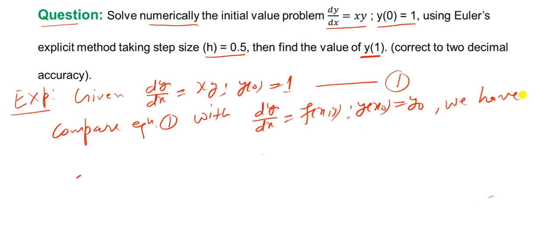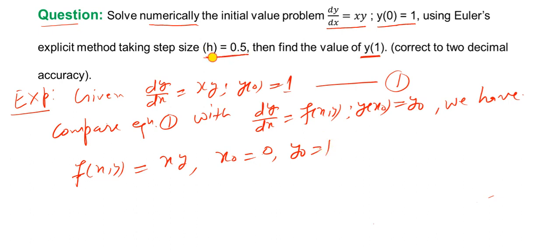We have f(x, y) = xy, x0 = 0, y0 = 1, and the given step size h = 0.5. We want to compute the value of y at x = 1. To compute an approximate value of y at x = 1, we generate a table.